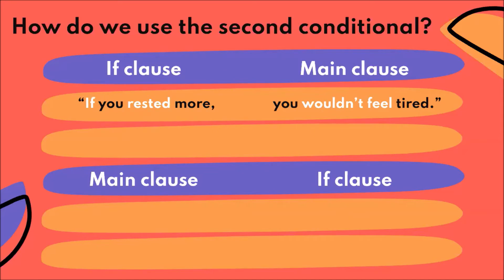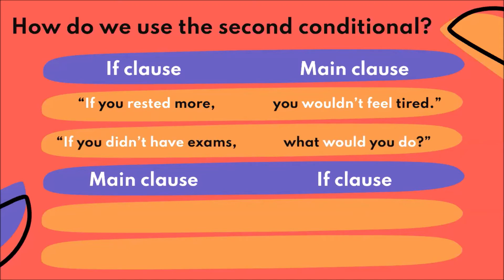The if clause is the condition for something else to happen, and the other thing would be the main clause. For example: you wouldn't feel tired — yo no me sentiría cansado. Si tú descansaras más, no te sentirías cansado. The main clause is the result that follows from the condition.